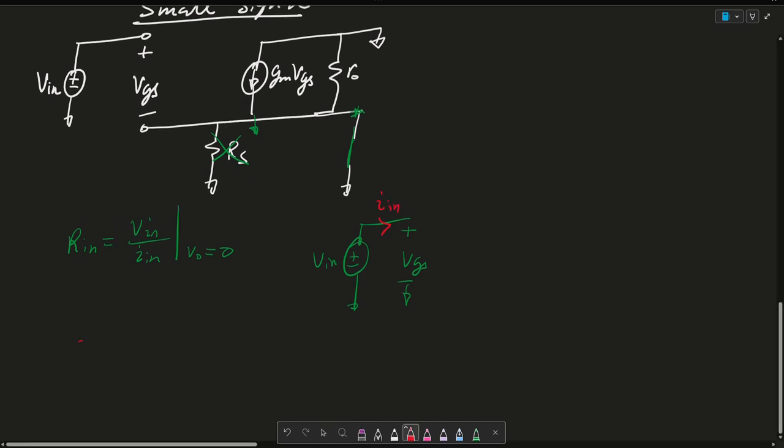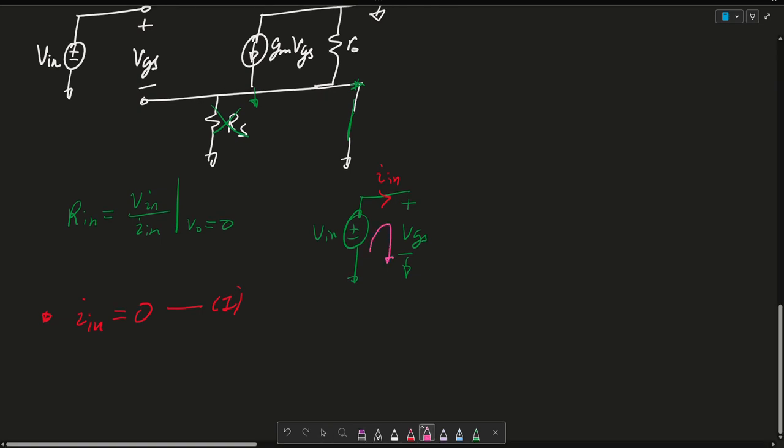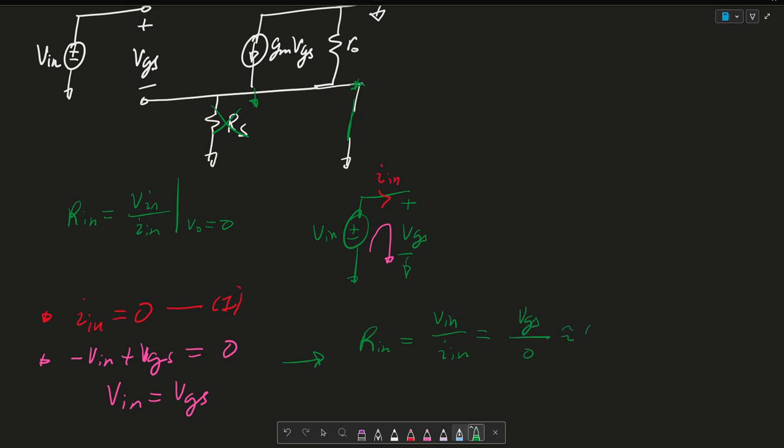We can say then that In is equal to 0. That's my first equation. My second equation is a KVL. So minus Vin plus Vgs is equal to 0, or Vin equals Vgs. So then let's go ahead and solve for Rin. Rin equals Vin over In, which is Vgs over 0, which is approximately infinity.